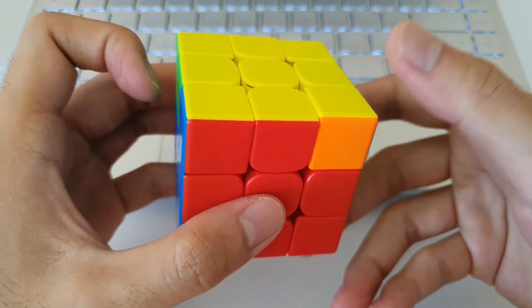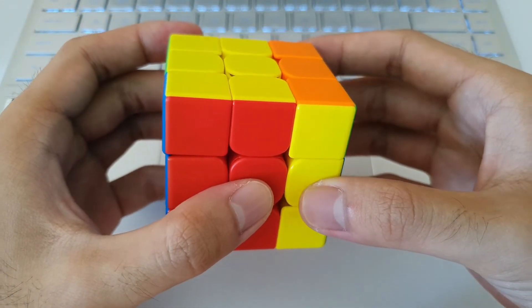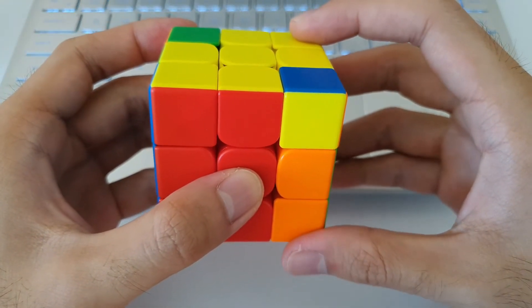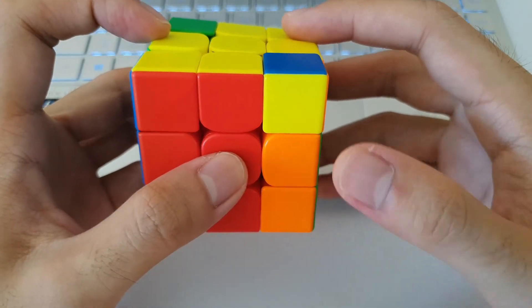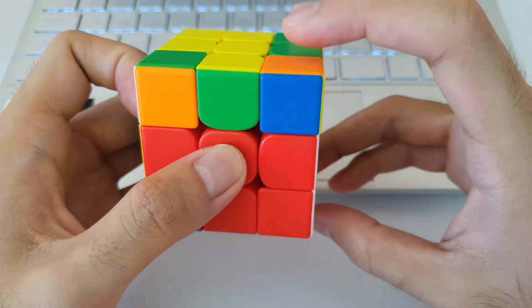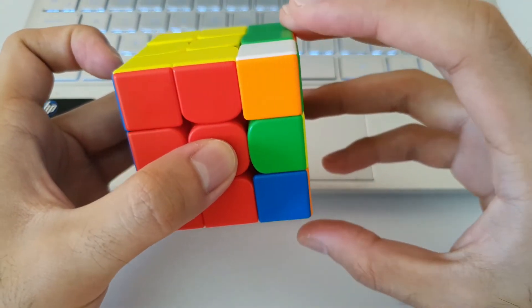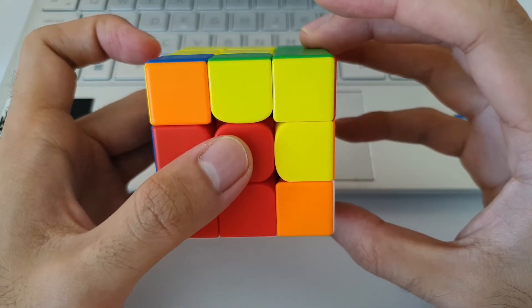So starting the algorithm off with a re-grip like this means that the next four moves, which is the inverse sexy, can be done quite smoothly. You notice how my thumb is set up to do this F prime. So that's exactly what I'll do to insert this edge into here. And then next up, inserting this back edge into the front here, I can do it the regular way.